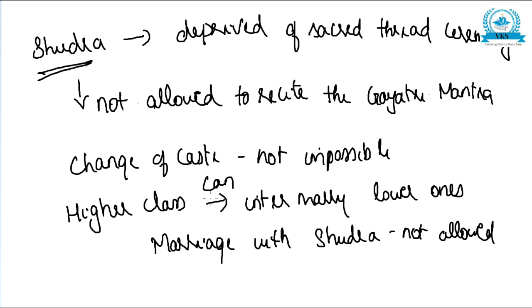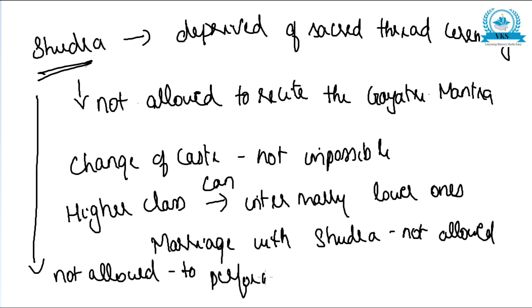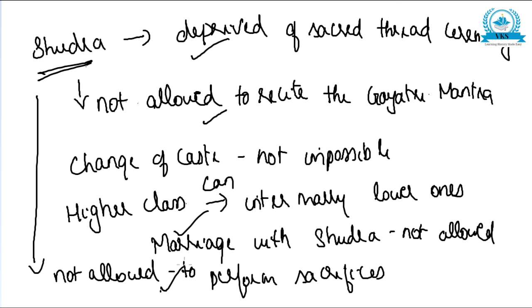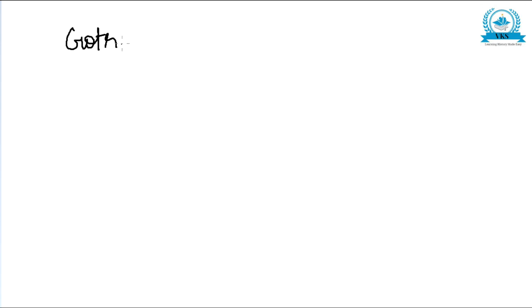Shudras were also denied the right to perform sacrifices. The institution of Gotra also appears in the Later Vedic period. Literally, Gotra means a cow pen — the place where cattle belonging to the entire clan is kept.